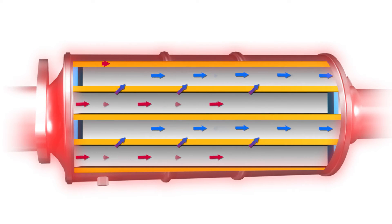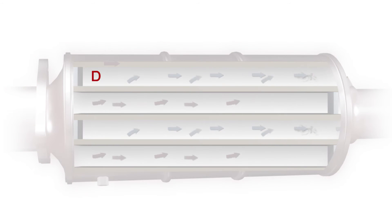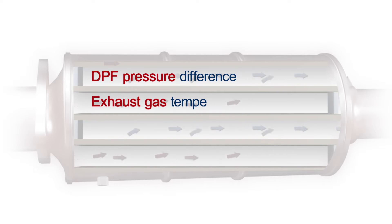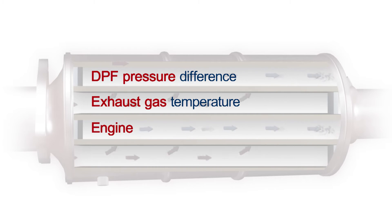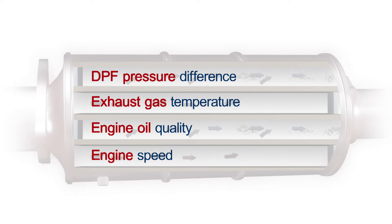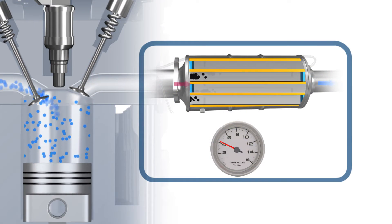The ECM commands the DPF regeneration after calculating various vehicle conditions such as DPF pressure difference, exhaust gas temperature, engine oil quality, engine speed, and so on. Excessive accumulation of soot in the DPF can cause a drop in engine performance.